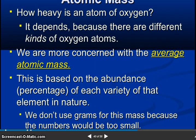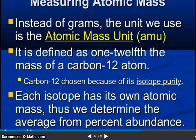Now atomic mass. How heavy is an atom of oxygen? It depends because there are different kinds of oxygen atoms. We are more concerned with the average atomic mass. This is based on the abundance percentage of each variety of that element in nature. We don't use grams for this mass because the number would be too small. So measuring atomic mass. Instead of grams, the unit we use is the atomic mass unit. It is defined as 1/12th the mass of a carbon 12 atom. Carbon 12 was chosen because of its isotope purity. Each isotope has its own atomic mass. Thus we determine the average from the percentage abundance.